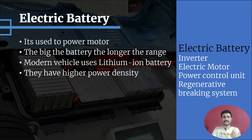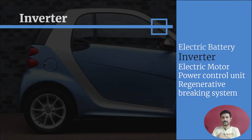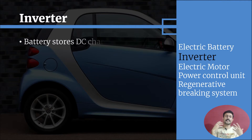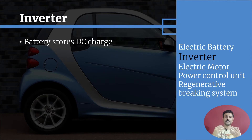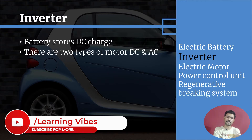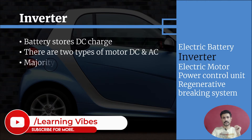The next thing in our list is the inverter. The inverter plays a key role. We are all aware that a battery stores electrical charge in DC. There are two types of motors used in electrical vehicles — one is a DC electrical motor and the other is an AC electrical motor.